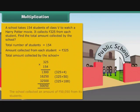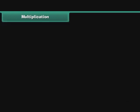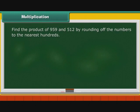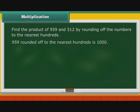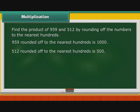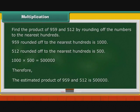Now, let us estimate the product of two numbers. Find the product of 959 and 512 by rounding off the numbers to the nearest hundreds. 959 rounded off to the nearest hundreds is 1000. 512 rounded off to the nearest hundreds is 500. 1000 multiplied by 500 is equal to 5 lakh. Therefore, the estimated product of 959 and 512 is 500000.